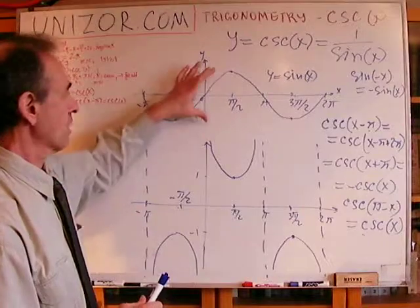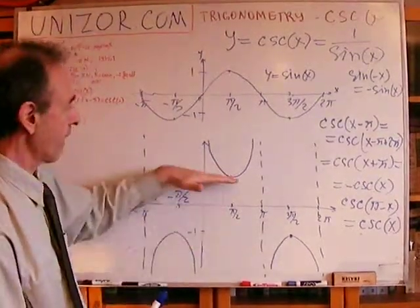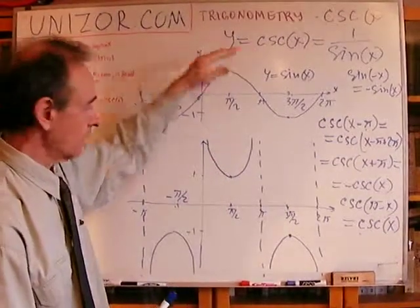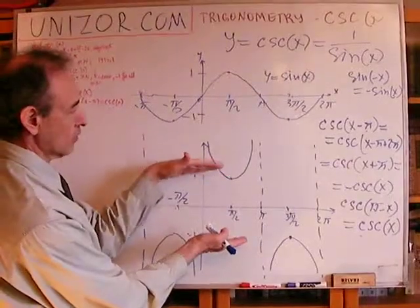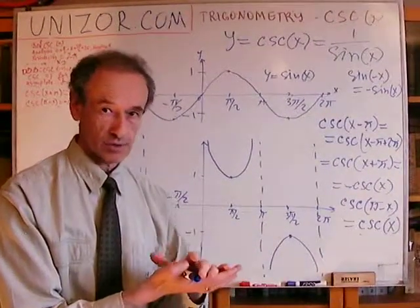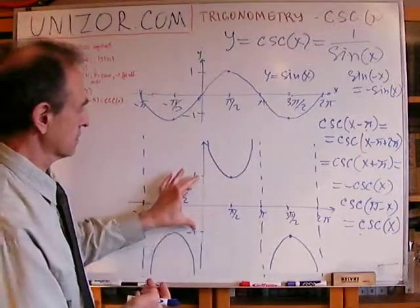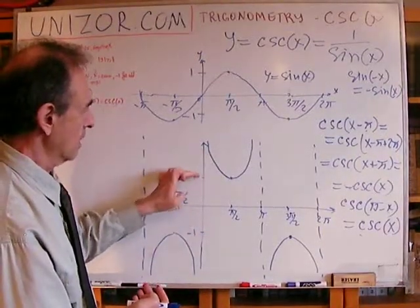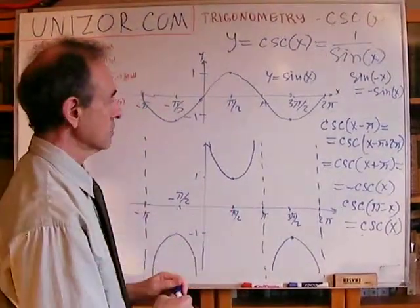What about the range? Well, you remember the range of sine is from minus 1 to 1. The range of 1 over sine would be either greater than 1 or less than minus 1. The interval from minus 1 to 1 is not part of the range of this function. It doesn't take these values—starting from 1 up and from minus 1 down, yes it does. So that's the range.